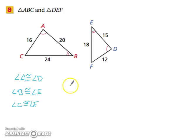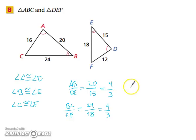And now let's look at our side measures. We have AB over DE equals 20 over 15, which is 4 thirds. Then we have BC over EF, which is equal to 24 over 18, which gives you 4 thirds as well. And we have AC over DF, which is 16 over 12, which is also 4 thirds.